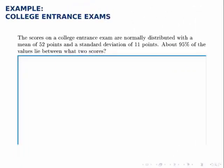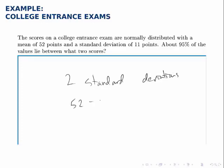Scores on a college entrance exam are normally distributed with a mean of 52 points and a standard deviation of 11 points. We're asked to find what two scores encompass 95% of test takers. The empirical rule tells us that 95% of the data falls within two standard deviations of the mean. Two standard deviations is 22 points. So 52 − 22 = 30 and 52 + 22 = 74 — therefore 95% of values lie between 30 and 74.